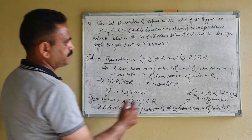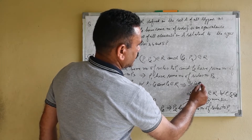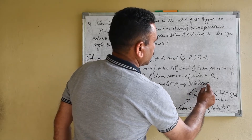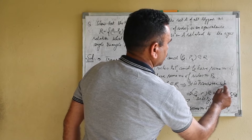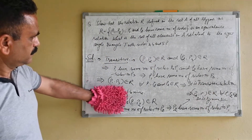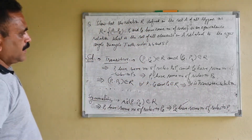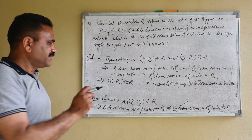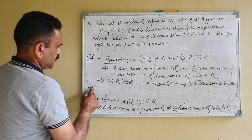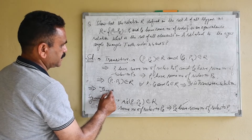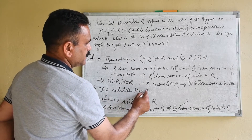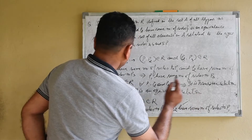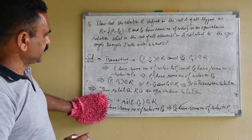So this implies it is transitive. A relation which is reflexive, symmetric, and transitive is known as an equivalence relation. So this implies this relation R is an equivalence relation, because it is reflexive, symmetric, and transitive in nature.